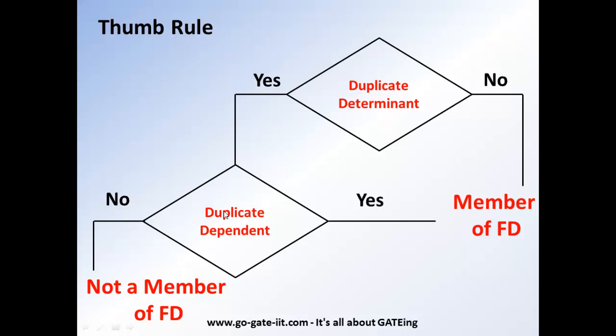If it is a duplicate determinant, that means it belongs to the set of functional dependence for the current relation.